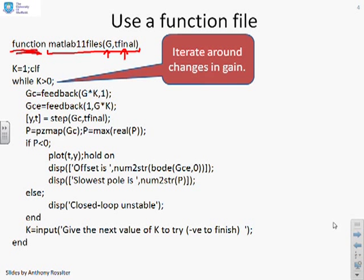The first step is setting up a while loop that iterates around changes in gain. The loop starts here and finishes down here, doing all this code over and over while k is greater than zero. As soon as you want to finish, just put a negative value for k.